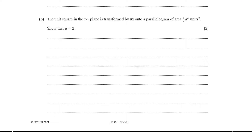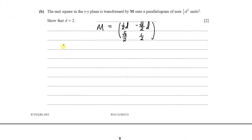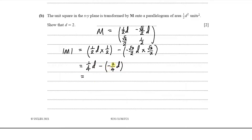We have the matrix M from part A and we need to find its determinant. That's ½d × ½ minus the product of −√3d/2 and √3/2. This gives ¼d minus (−3d/4), which is ¼d + ¾d, giving us a determinant equal to d.